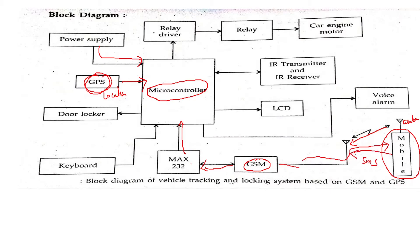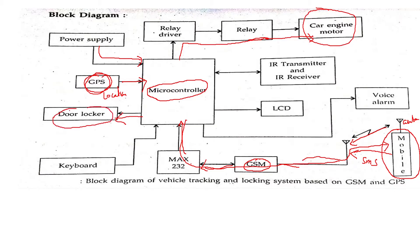The SMS is sent — it is a password word which is identified by the microcontroller — and it gives instructions to the relay driver, relay, and car engine motor, so the car engine motor will be turned off. Simultaneously, it also gives instruction to the door locker, where the doors of the car will be locked and the thief inside the car will remain inside because he cannot open the door.